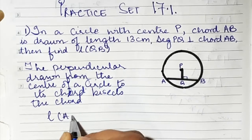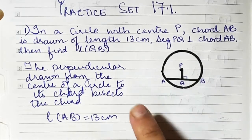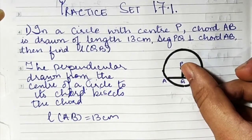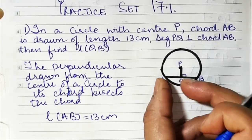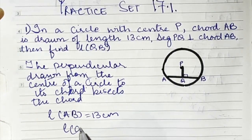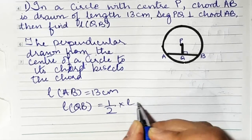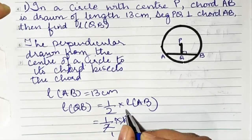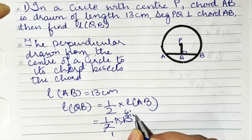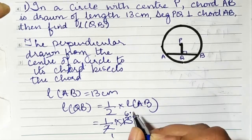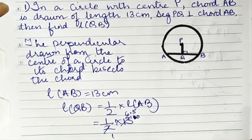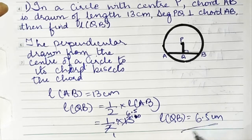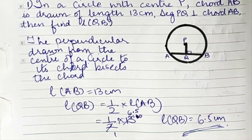The length of AB is 13 centimeters. We need to find QB. Since PQ bisects AB, QB is going to be half of AB. Half of 13 is 6.5. So the length of QB is equal to 6.5 centimeters.